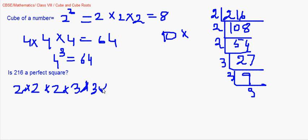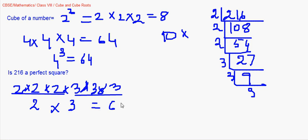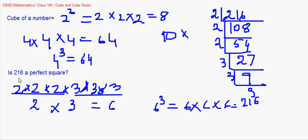As with square roots where we grouped in pairs, here we group prime factors in threes. We have one group of three 2s and one group of three 3s. Taking one factor from each group gives 2 × 3 = 6. So 6³ = 216, confirming that 216 is a perfect cube.